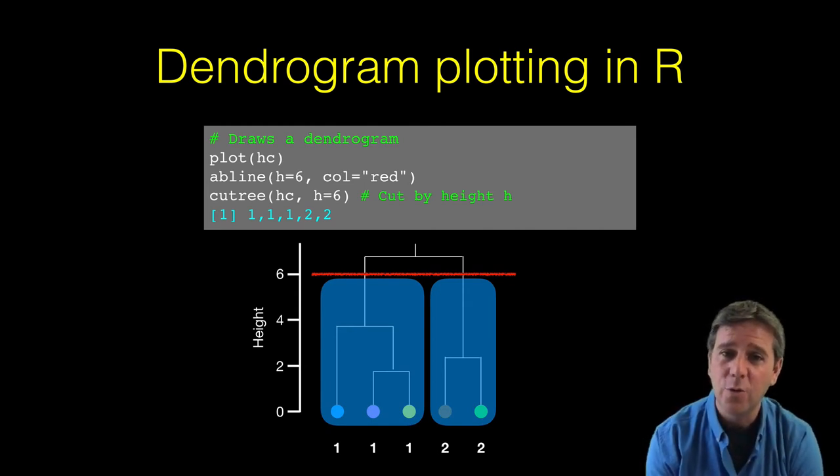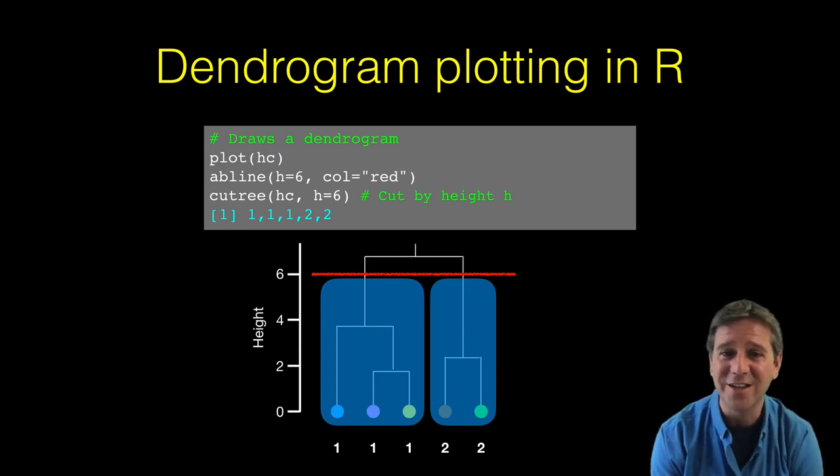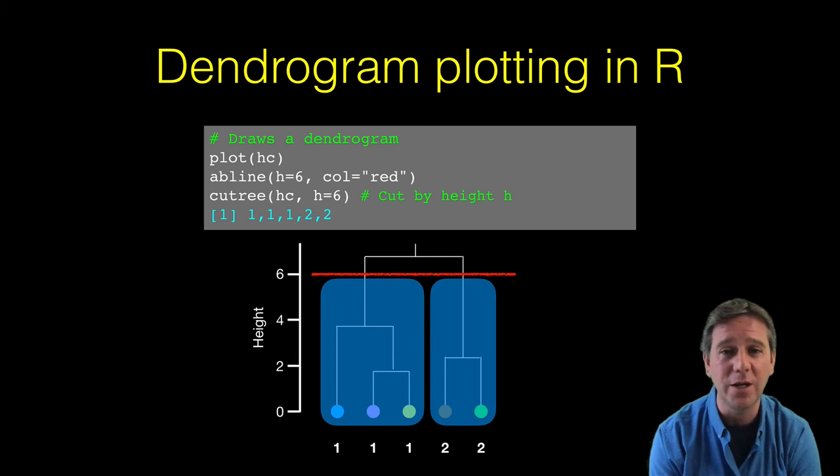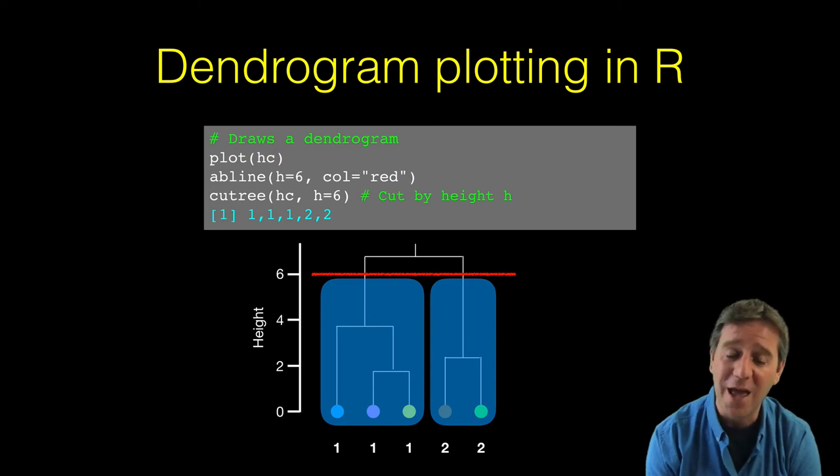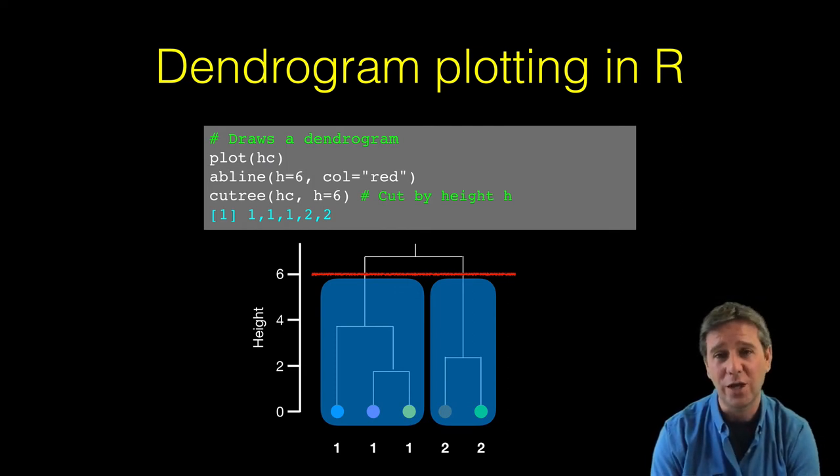In this case, we would have a vector of length five - three ones meaning the first three points are in cluster one, and two twos meaning the last two points are in cluster two. That membership vector, just like the one from k-means, can be obtained here for hierarchical clustering by using the cuttree function.